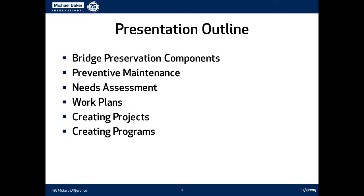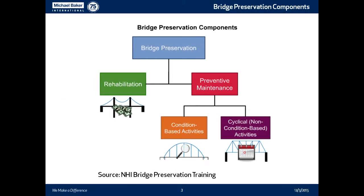The first slide will be kind of a repetition — you have seen this many times. It's a plug for the bridge preservation web training class that NHI has. This slide from the class also mimics the Federal Highway Guide in classifying bridge preservation. To one side is rehabilitation, to the other is preventive maintenance, which includes condition-based activities and cyclical non-condition activities. Rehab always costs more money; condition-based activities you have to look for, and cyclical ones you just schedule.